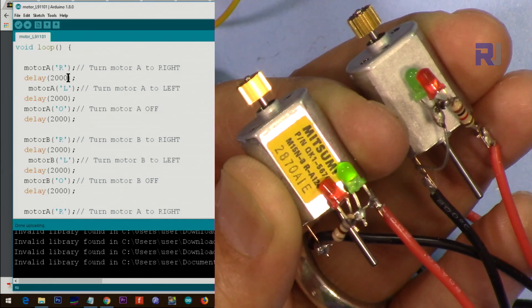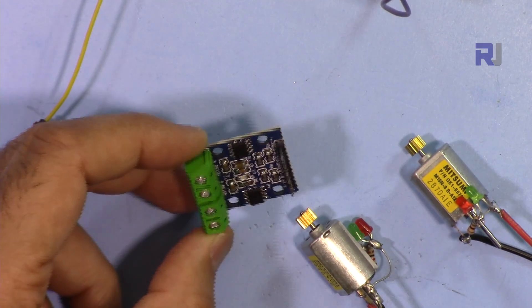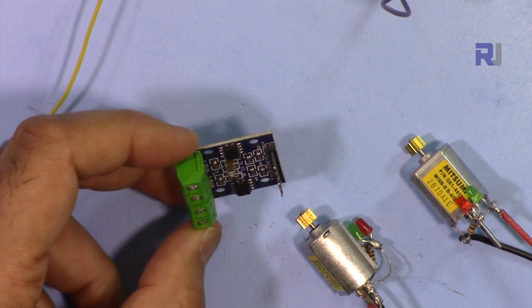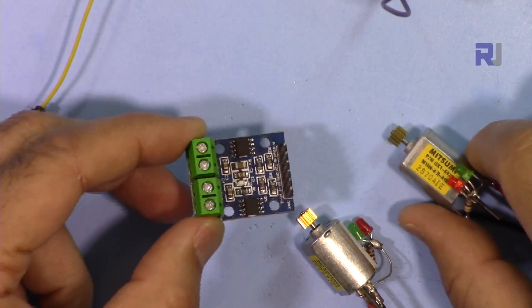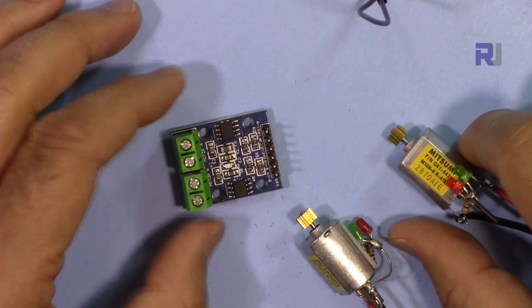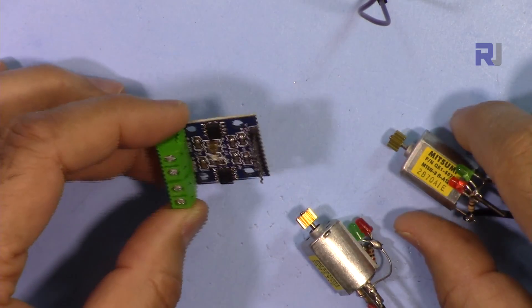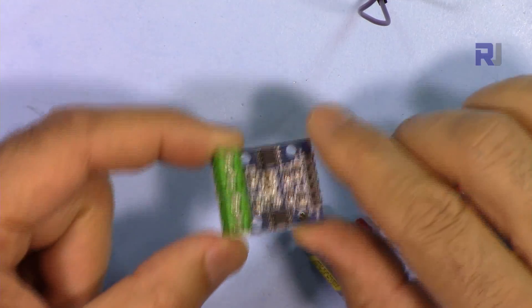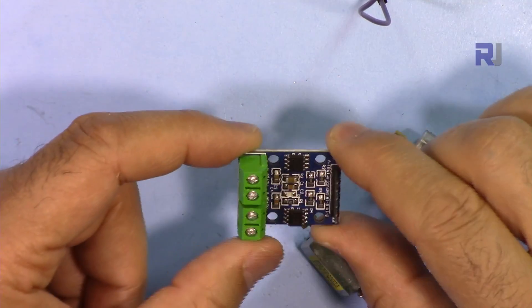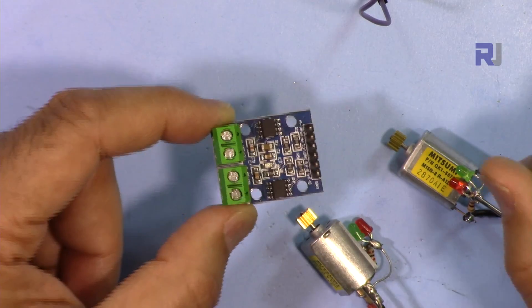Thank you for watching. This was an introduction on how to use this L9110 chip with this module to control DC motors. Please subscribe so you can get updates of my upcoming videos. I might have a video to control stepper motors using this, so this can be used for that purpose. See you next time.